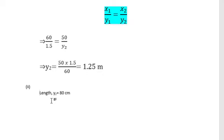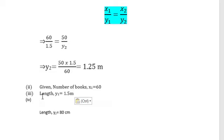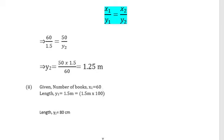Before solving part two, let's write what are given. Number of books is 60 and length is 1.5 meter, but for the second part the length is given as 80 centimeter, so it is better to convert 1.5 meter to centimeter. If you multiply 1.5 by 100, you get 150 centimeter. Conversion done.